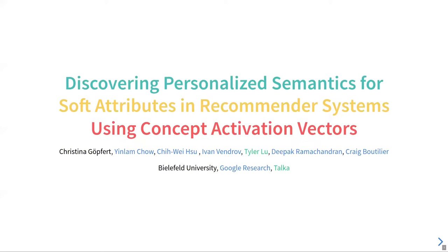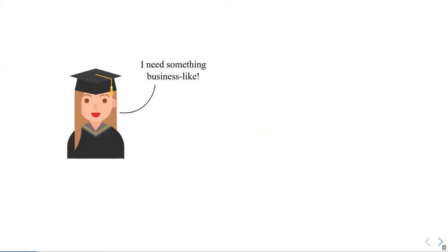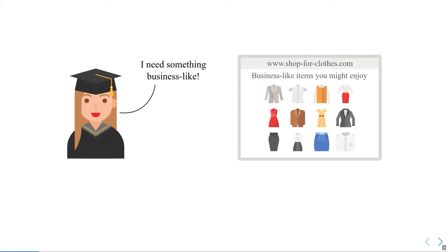Let's say we have this person. She recently handed in her thesis. She's jumping into the job market and needs to interview for jobs. She needs to buy some clothes that are appropriate for this purpose. She says, I need some business-like clothes. She goes to her favorite shopping website and they give her personalized recommendations based on her history. But a lot of these recommendations aren't actually business-like. Naively, the recommender can't access what the user needs at that moment. What we would like is for her to communicate I need something business-like. Then the recommender shows her only business-like items tailored to her interests.